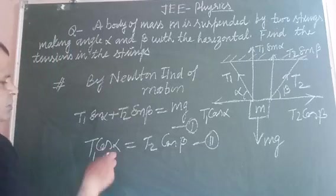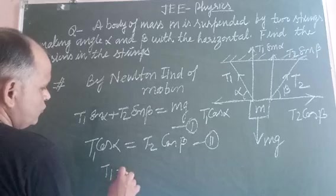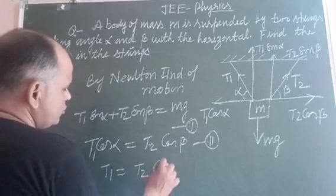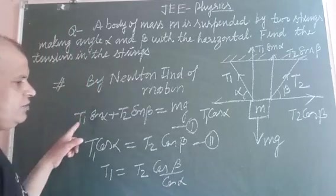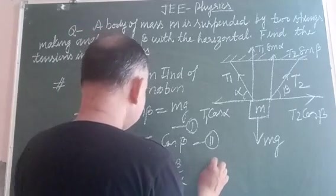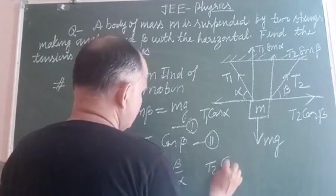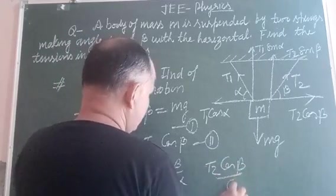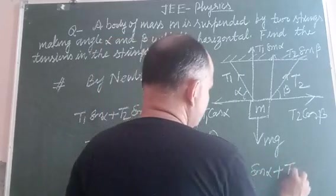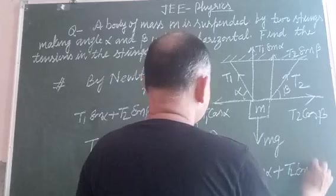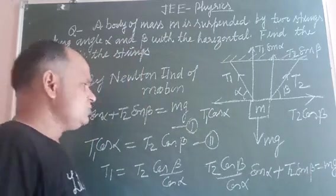These are the equations. By solving them we can find T1 and T2. We put T1 equal to T2 cos beta over cos alpha in first equation and we get T2 cos beta over cos alpha into sin alpha plus T2 sin beta equal to Mg.